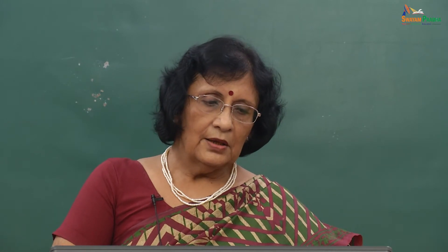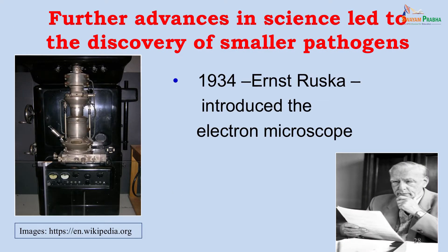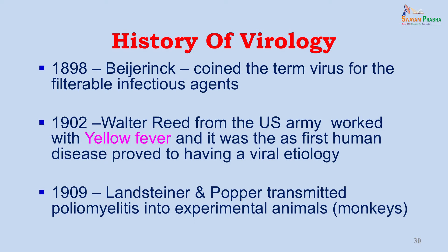Over the next decade, scholars carried on this good work, and almost all bacterial diseases could be identified by their causative agents. Further advances in science led to the discovery of even smaller pathogens — smaller than bacteria. In 1934, Ernest Ruska introduced the electron microscope, after which viruses could be described. In the history of virology, Beijerinck coined the term 'virus' for filterable infectious agents that could pass through normal bacterial filters. The first pathogenic virus was described by Walter Reed, working for the US Army, who showed that yellow fever was caused by a virus. In 1909, Landsteiner and Popper transmitted poliomyelitis into experimental animals, proving Koch's postulates on the poliovirus.